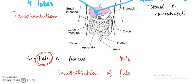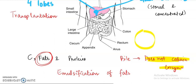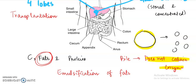Importantly, bile does not contain any enzyme. What it does is help in the emulsification process. Emulsification is a process in which bigger molecules of fat are broken down into smaller ones. Until emulsification of fats occurs, the small intestine is not going to digest fat. That is why the presence of bile is very important. Bile is produced by the liver, concentrated and stored in the gallbladder, and from there it comes into the small intestine.